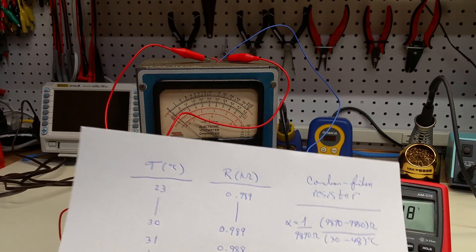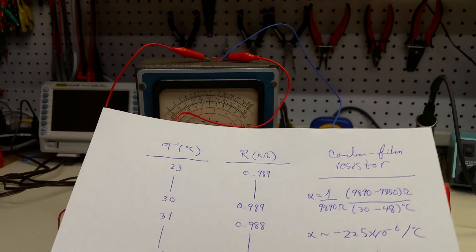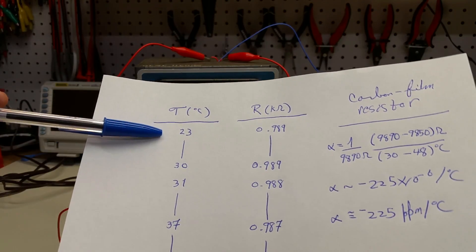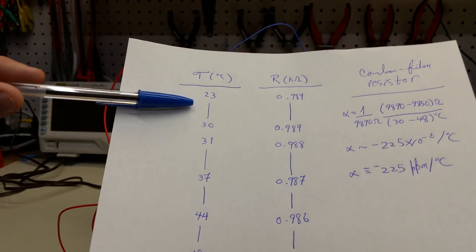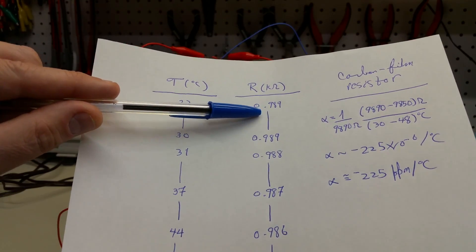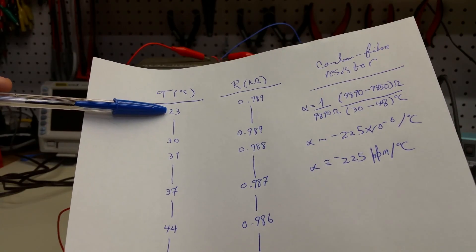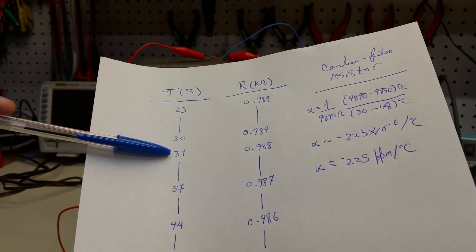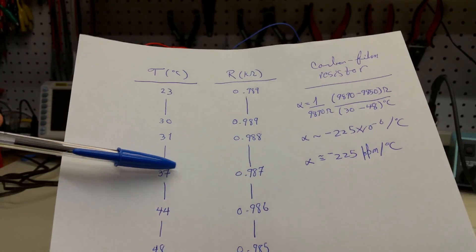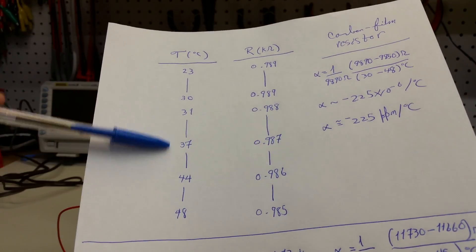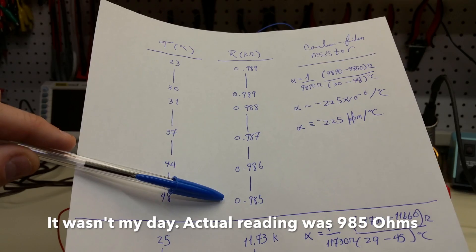Through the magic of YouTube, we're now an hour later. And here's the numbers. So for the carbon film resistor that I just showed you, the temperature started off just at room temperature here in my shop is around 23 degrees. And the initial reading on the ohmmeter was 0.989 kilohms. The resistor didn't change in the range from 23 to 30 degrees C. But when we got to 31 degrees C, it decreased by 10 ohms. And then by the time we got to 37 C, it had decreased again, and so on and so forth. So the final reading was at 48 degrees C, we had 985 ohms.